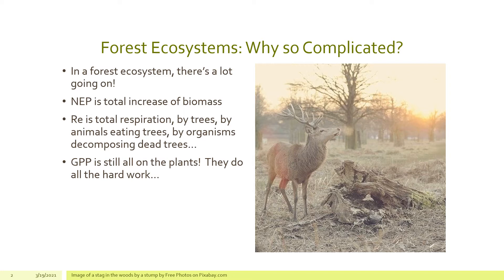In this system, NEP — net ecosystem production — is the total increase of biomass in the whole system. RE is total respiration, and that's respiration taking place by the trees and the grass, by animals that are eating the trees, and by organisms that are decomposing dead trees. An example is the stump that's decomposing in the ground, done by microbes that are also respiring.